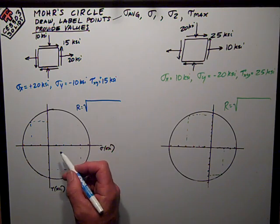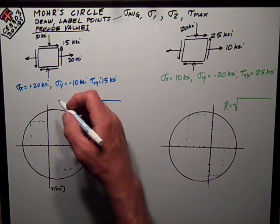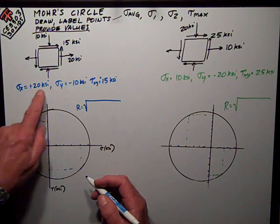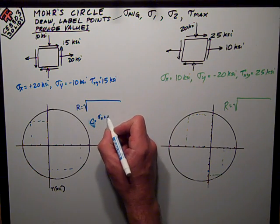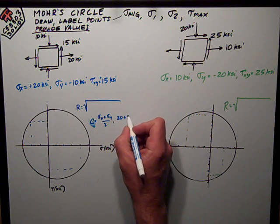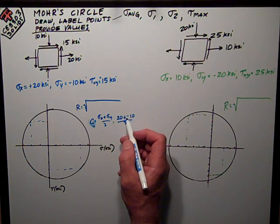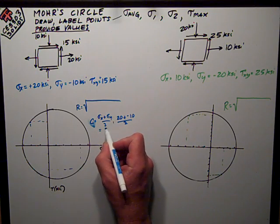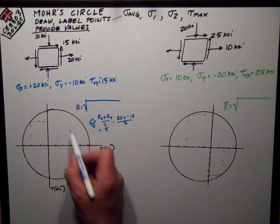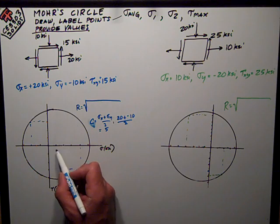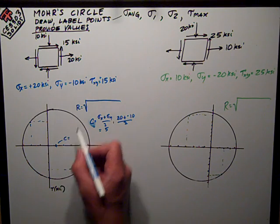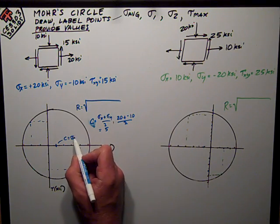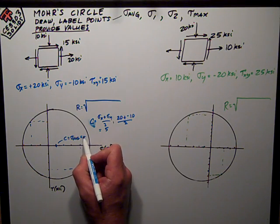First thing to do is figure out what the center of this circle is. The center of the circle is just the average of sigma x and sigma y. So sigma average, the center of the circle, is equal to sigma x plus sigma y over 2. That's just 20 plus negative 10 over 2. 20 plus negative 10 is 10, divided by 2 is 5. So the center is 5, which is also going to be the average stress — positive 5 ksi.